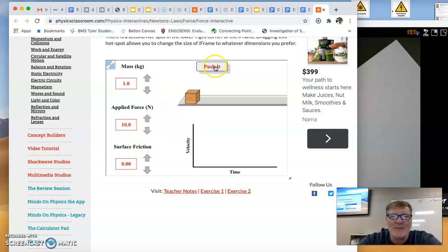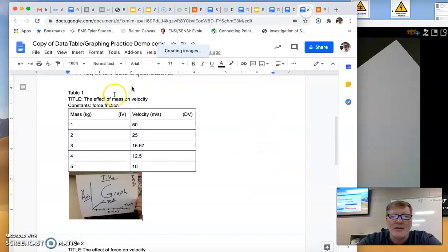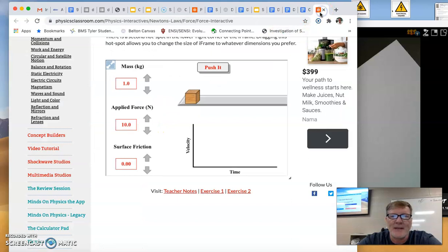I want to make sure my friction is constant at 0 and my applied force is constant at 10 newtons. I'm going to run it. Then I'm going to click on the last dot to determine the velocity, 50 meters per second. So mass of 1, velocity of 50 meters per second.